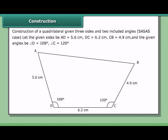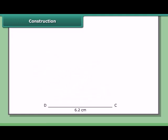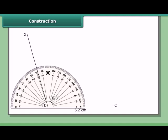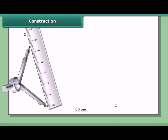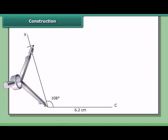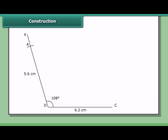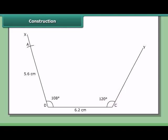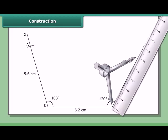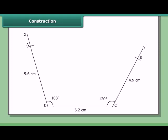In this case we do not need to construct the quadrilateral by constructing two triangles. Draw DC = 6.2 cm. At D, draw angle CDX = 108°. With D as center and radius 5.6 cm, cut off DA on ray DX. At C, draw angle DCY = 120°. With C as center and radius 4.9 cm, cut off CB on ray CY. Join AB. Then ABCD is the required quadrilateral.